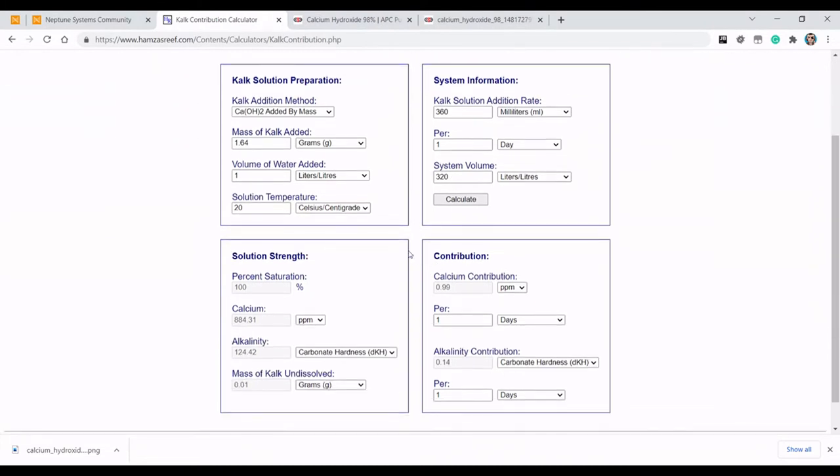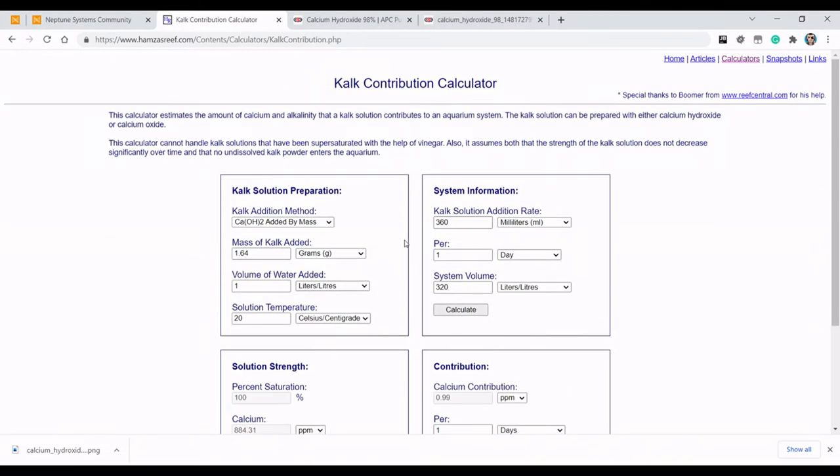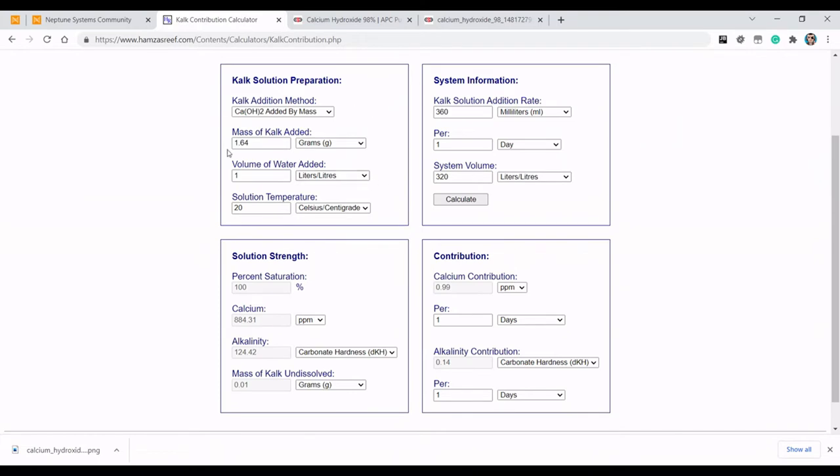This is the Kalk Contribution Calculator. It's broken up into sections. You've got your Kalk Solution part of the calculator. What the actual strength of the solution is, is the second part. The third part is where you enter your system information. And the fourth part shows you how much actual calcium and alkalinity is being added per the volume of saturated Kalkwasser you're adding.